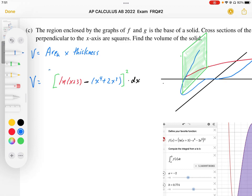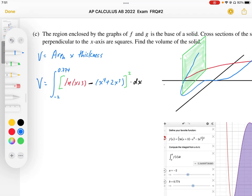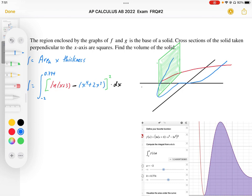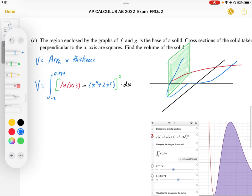And to find the total volume, we're going to sum it up from negative 2 to positive 0.774. So that's going to be stacking up all those squares vertically and generating a solid in that way. There's going to be the volume of the solid.